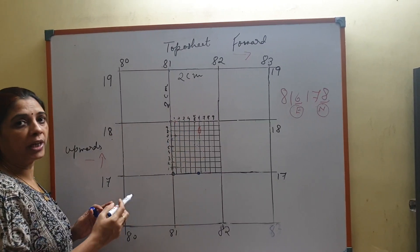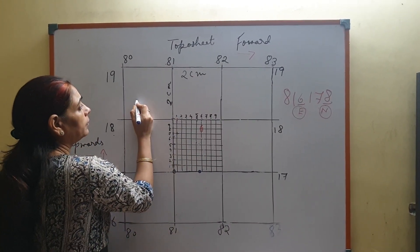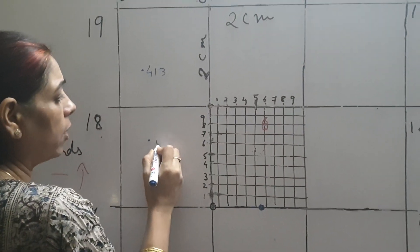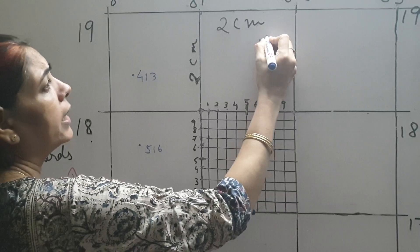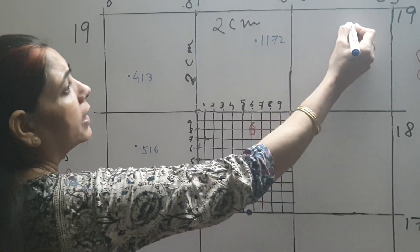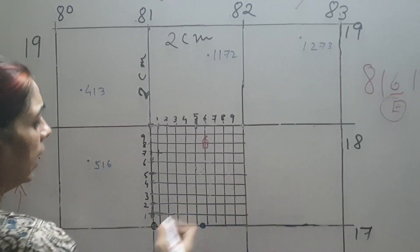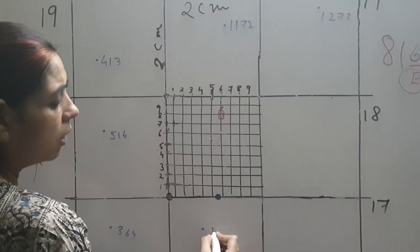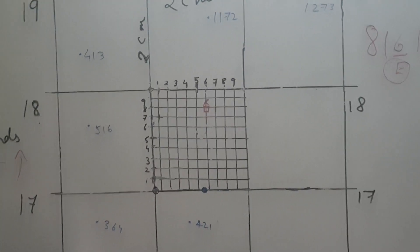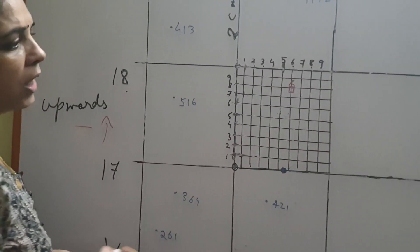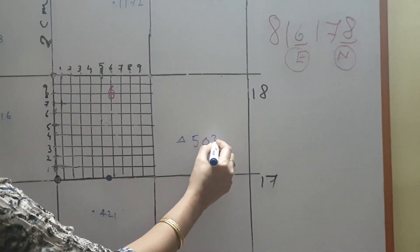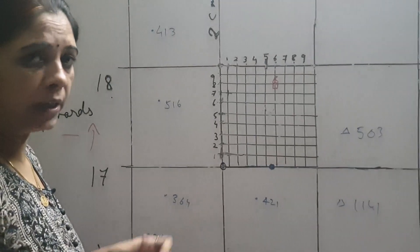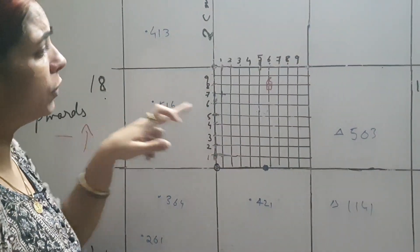On the topo sheet there are some values written. There are spot heights such as 1413, 516, 1172, 1273, 364, 421, and 2026. There could also be triangulated heights such as 503 and 1114. So you look at the topo sheet all over — you will see the spot heights and you will see the triangulated heights.